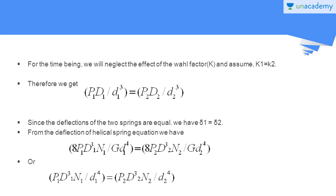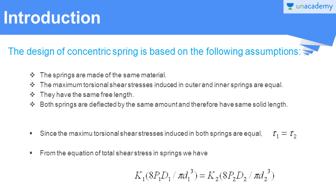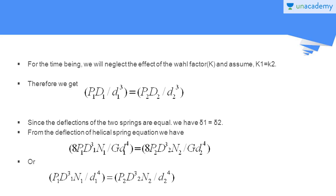For the time being, we will neglect the effect of the Wahl factor and assume that K₁ equals K₂. Therefore, canceling out K₁, K₂, π, and 8, we get P₁D₁ / d₁³ equals P₂D₂ / d₂³. This relation is obtained by making the values of the total shear stresses developed in the two springs equal.